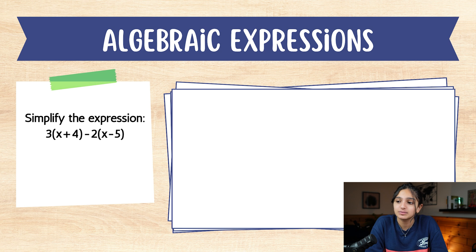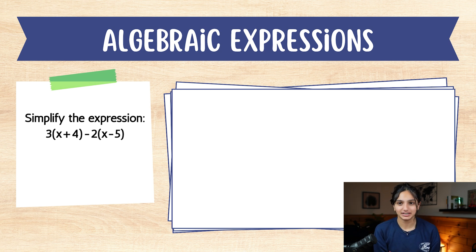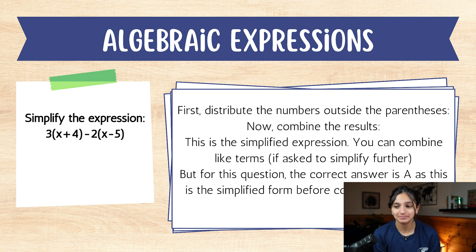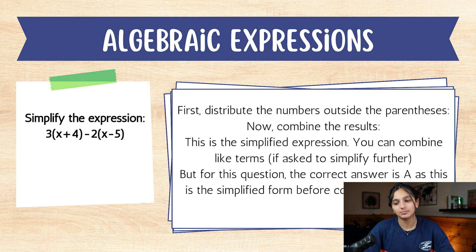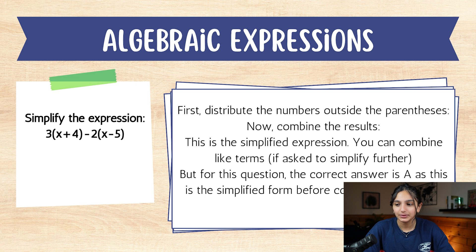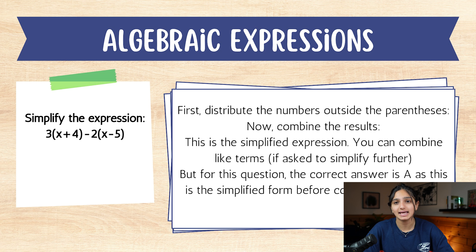Now for our sixth question: algebraic expressions. Simplify the expression: 3(x + 4) - 2(x - 5). Take a minute to simplify the expression. If you got x + 22, you are correct. Let's take this step by step. First, distribute the numbers outside the parentheses: 3(x + 4) = 3x + 12, and -2(x - 5) = -2x + 10. Then combine like terms: 3x - 2x = x, and 12 + 10 = 22. So our final answer is x + 22.